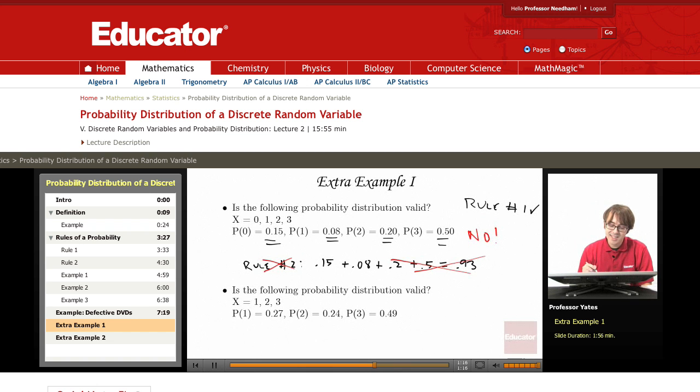Okay, what about the second example here? Well, rule number 1 seems to be okay, right? Each one of these is a value between 0 and 1. Now what happens for rule number 2?